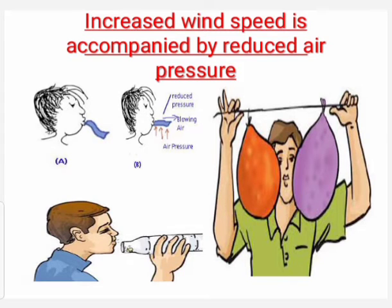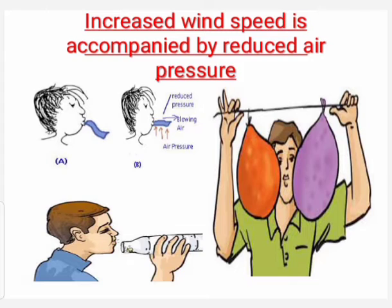Third activity — blowing into the bottle. When we blow into the mouth of the bottle, the air near the mouth has higher speed. This decreases the pressure near the mouth. The air pressure inside the bottle is more than near the mouth. So the air inside the bottle pushes the ball out.